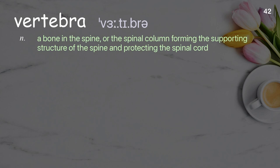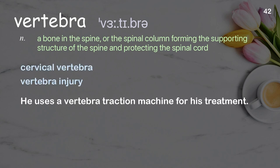Vertebra: a bone in the spine, or the spinal column, forming the supporting structure of the spine and protecting the spinal cord. Examples: cervical vertebra; vertebra injury. He uses a vertebra traction machine for his treatment.